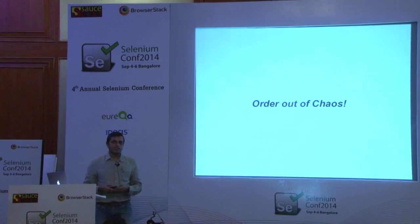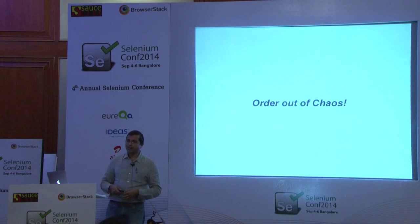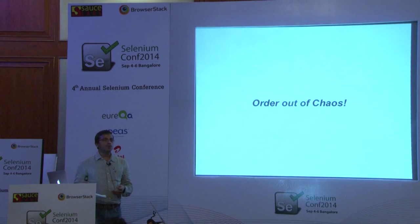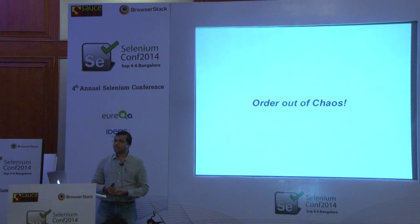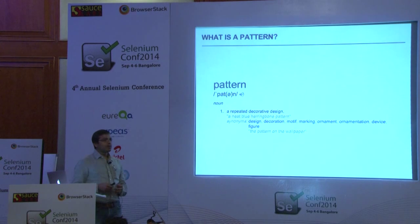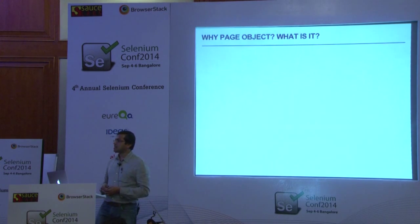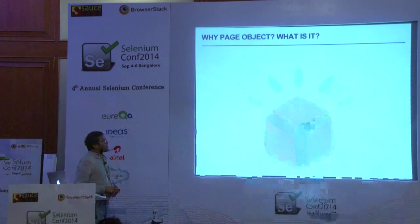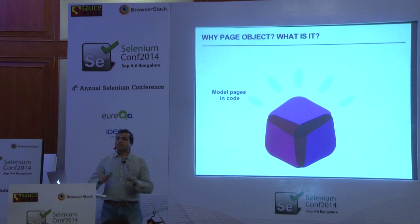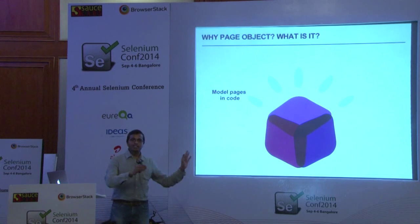This is where we have to start making order out of this chaos. I really love this statement from Dan Brown's Lost Symbol — it makes sense, because this is really a chaotic environment. If you don't correct yourself at this point, your framework is never going to work out. You'll end up just maintaining scripts and not testing the product. A pattern is a repeated decorative design — something you take as a template, apply in various contexts, and make easy to reuse. That's where page object pattern really comes in.